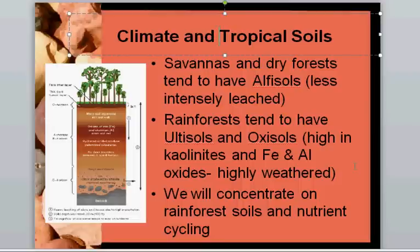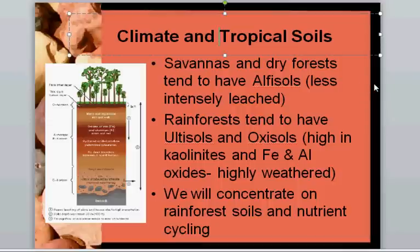The reason rainforest soils are high in kaolinite clays and iron and aluminium oxides is because leaching removes most of the other components of weathered rock further down into the profile. Savannas and dry forests tend to be less high in kaolinite clays and iron and aluminium oxides, and are consequently less orange and red — less intensely leached. We're going to concentrate on rainforest soils and nutrient cycling in this lecture because we are looking at rainforest and rainforest management.